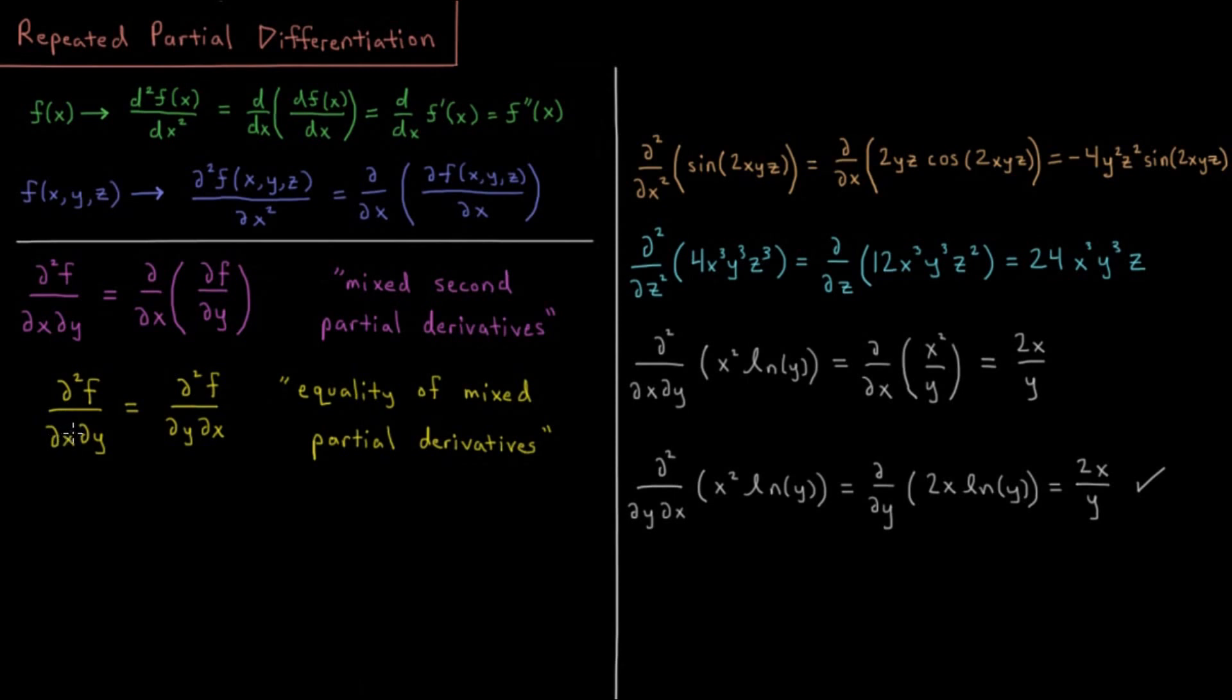So let's do some examples here and see these things working in practice. Second partial derivative with respect to x of sine of 2xyz. The first derivative with respect to x, by the chain rule we'll pull out a factor of 2yz. The derivative of sine is cosine, so we get 2yz cosine 2xyz.